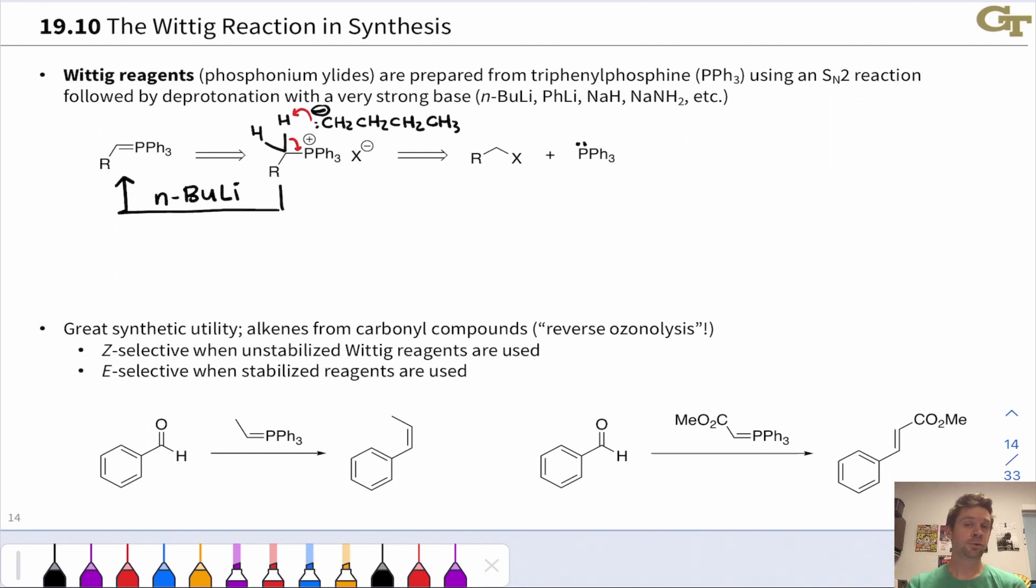To get to the phosphonium cation or phosphonium salt in the first place we can start with an alkyl halide and take advantage of SN2 reactivity and the fact that the phosphorus in triphenylphosphine PPh3 is a good nucleophile.